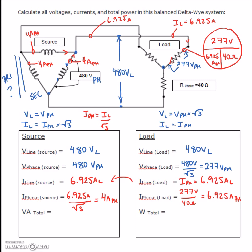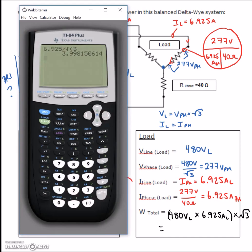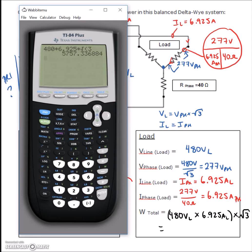Last, we find the power values. Total wattage = V_line × I_line × √3 = 480V × 6.925A × √3, which gives us 5,757.34W.